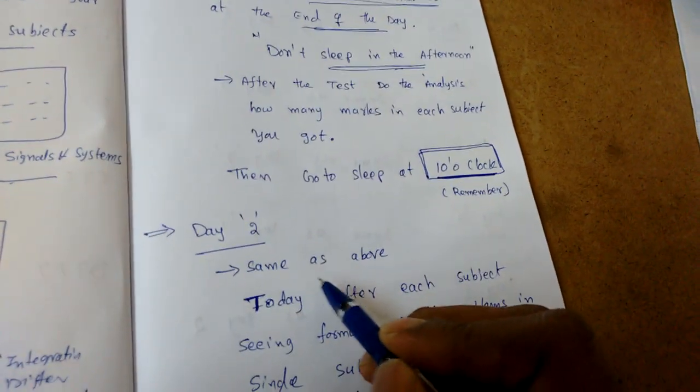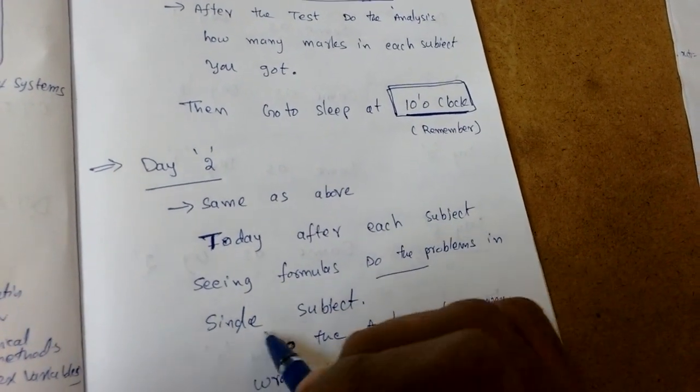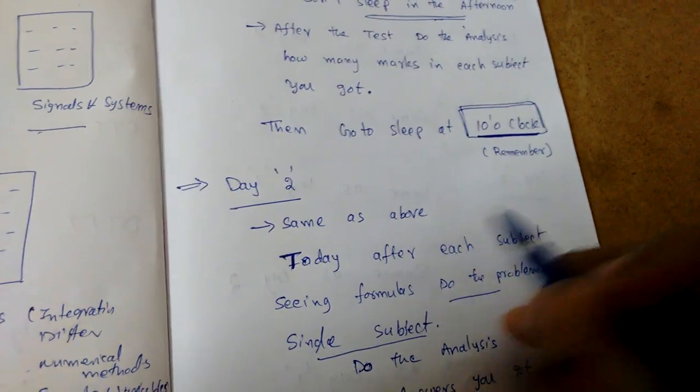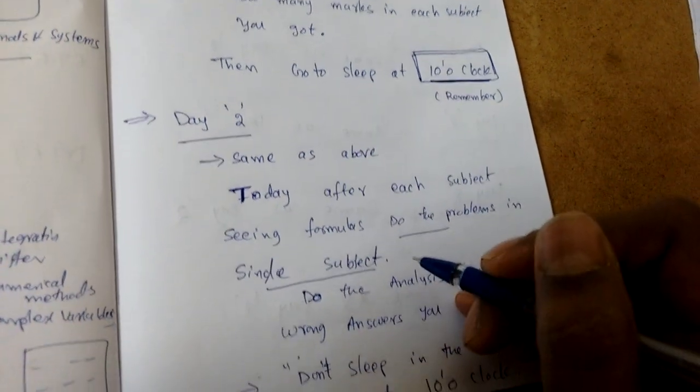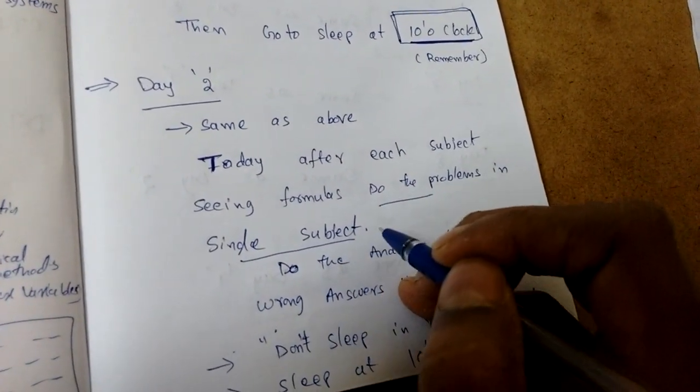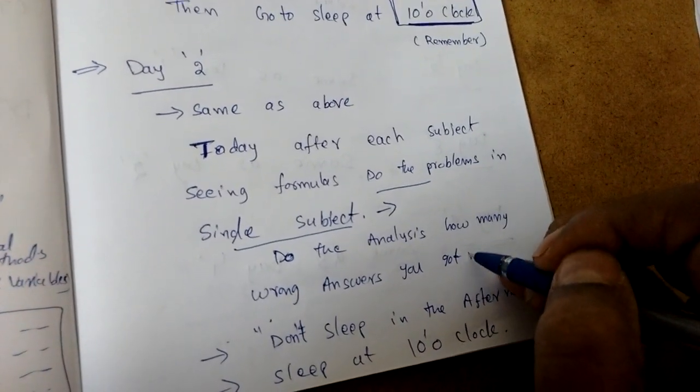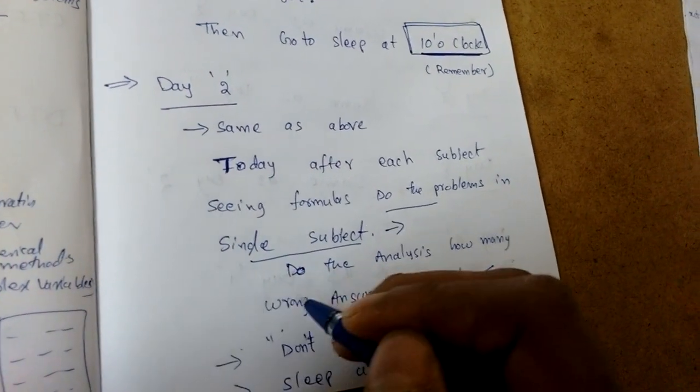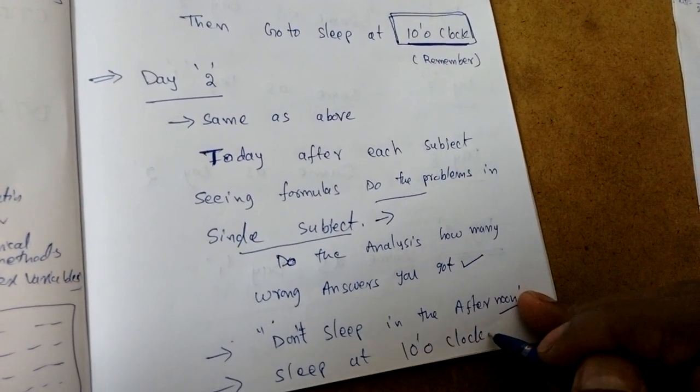We have to habituate like this - all the formulas, then revision of all the subjects in a simple way, one mock test and analysis, don't sleep in the afternoon, then go to sleep at 10 o'clock. Day 2 is same as above, but today, after each subject seeing the formulas, do the problems in single subject. It may be network theory, EDC, AEC. Do previous GATE problems - already you have solved, no problem. Just revise and see. Without seeing any formula, do the problems.